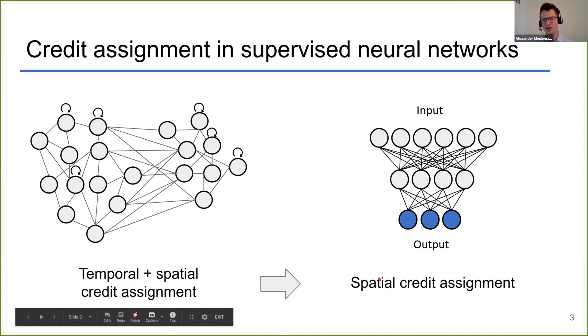We incorporated a divide and conquer strategy and decided to only focus on the spatial credit assignment problem because that's already difficult enough on its own. We used a simple feedforward neural network architecture to investigate it. In this, the credit assignment problem translates into how the output can send feedback signals to the hidden layers so that the hidden layers can know how to update their synapses.